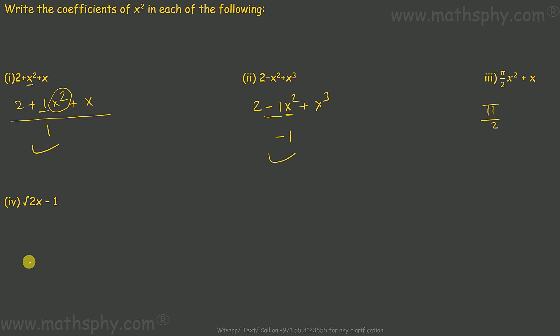This one here, I don't see x² in this expression. Does it mean there is no coefficient of x² in this expression? Apparently there is no x square, but can we fabricate x² and plug into this expression? Let's try. √2x - 1, we know that...